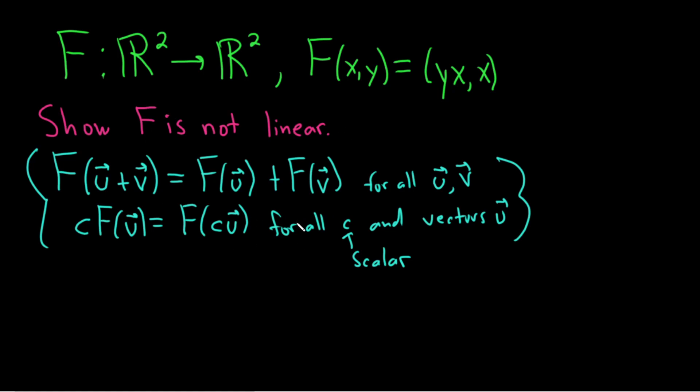So if both of these conditions are satisfied, then we say that this is a linear transformation. And this is the general definition. You can apply this to any linear transformation. So if you're doing a problem and it's different from this one and you're trying to show it's not linear, the steps are the same. You basically just have to violate one of these conditions.